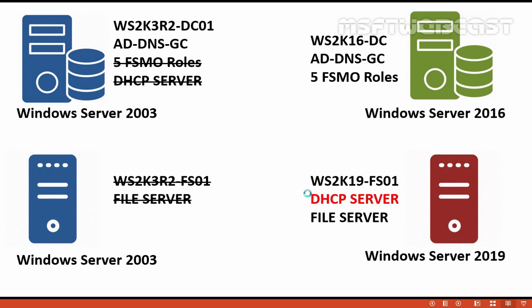This is the scenario we have till now: we have transferred all five FSMO roles to our Windows Server 2016 server. We have also configured Server 2016 as a global catalog server. We have migrated the DHCP server from Server 2003 to 2019, as well as migrated our shared folders from Server 2003 to Server 2019. In this video, we will remove the Windows Server 2003 domain controller from our mylab.local domain.